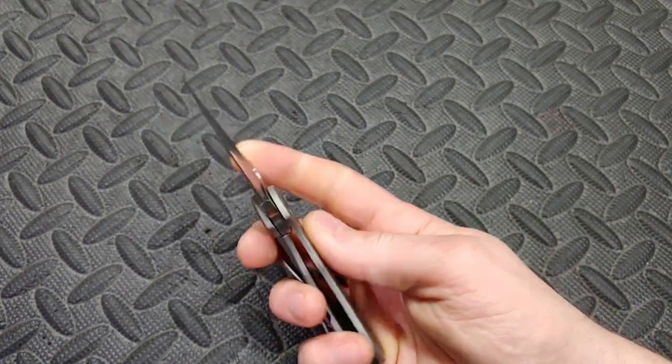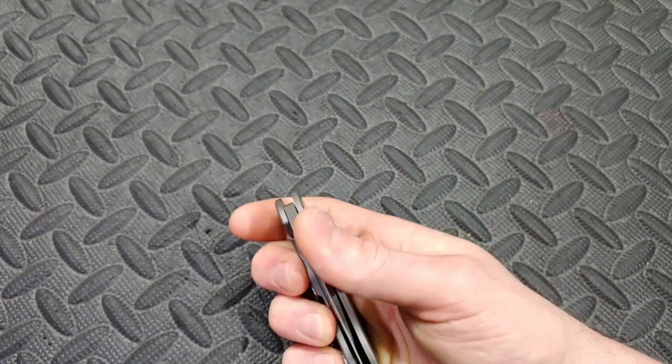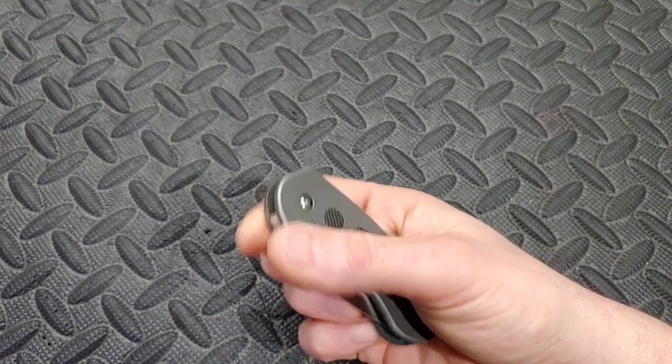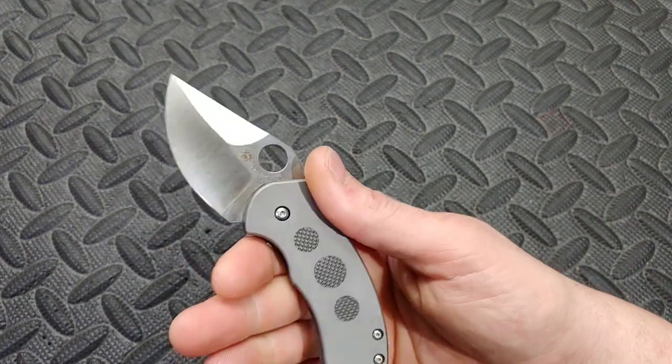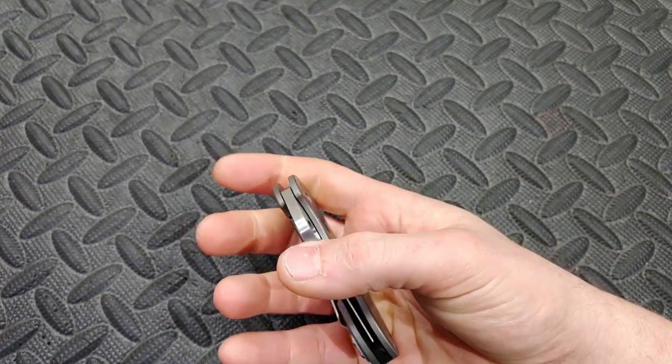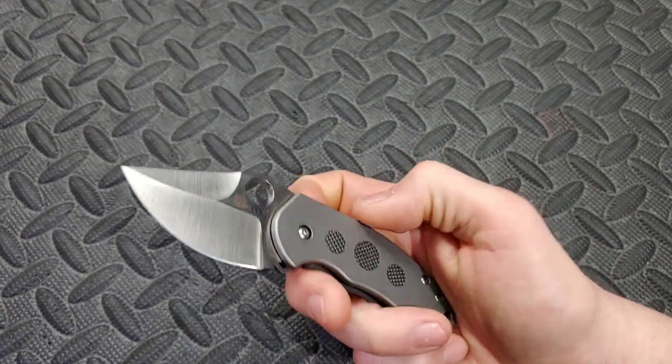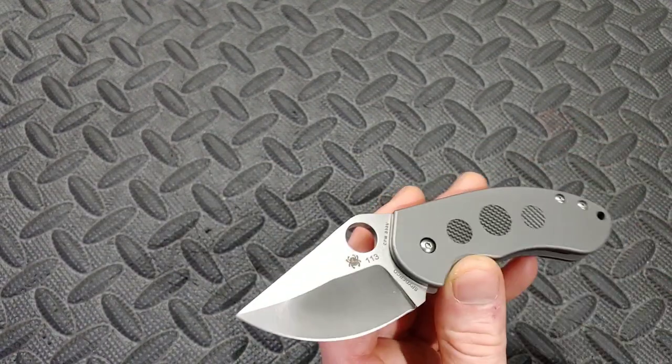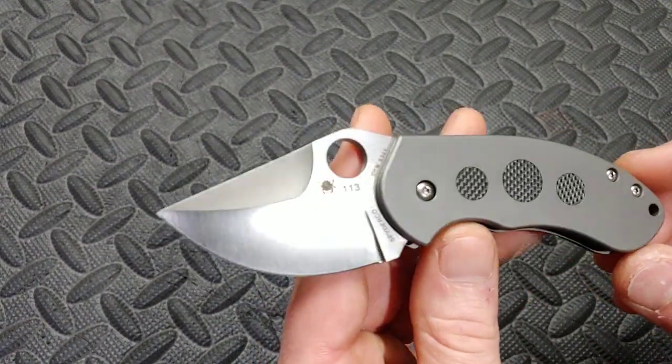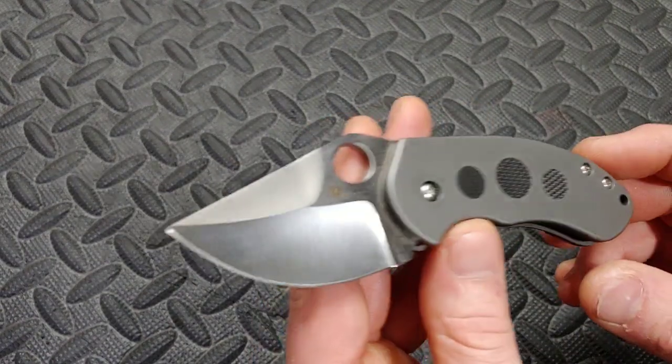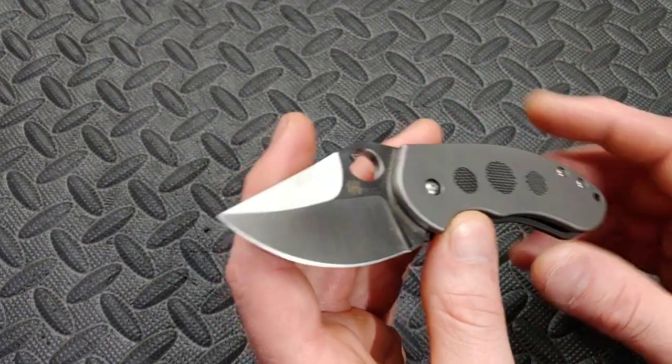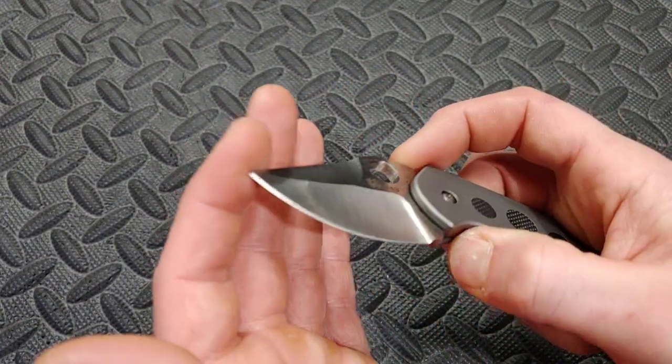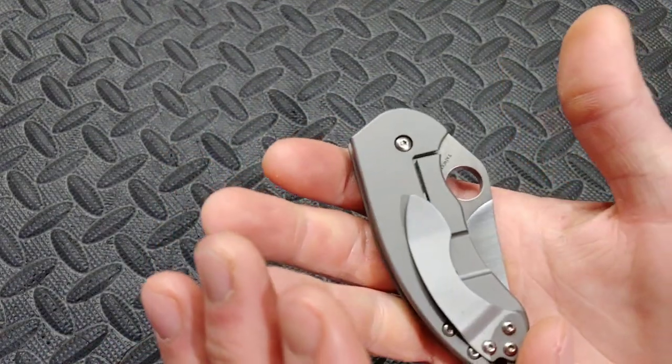Next. Spyderco Chubby. Now this one I haven't done a review on because it's discontinued and I just don't know if a lot of people will be interested in watching it. This is somewhat of a collectible knife. They are a little bit hard to get but they are sought after. So you can find them on eBay and people selling them. They're not cheap but they are very cool. This is VG-10. Nice deep hollow grind. Very thin behind the edge. I love it when Spyderco does their hollow grinds. They do a great job on it.